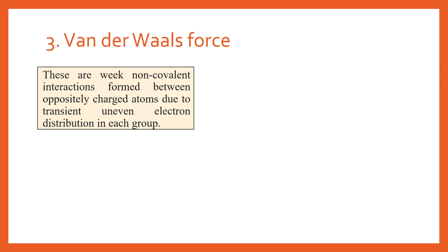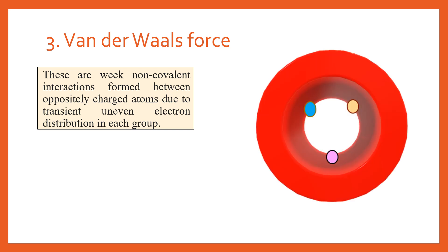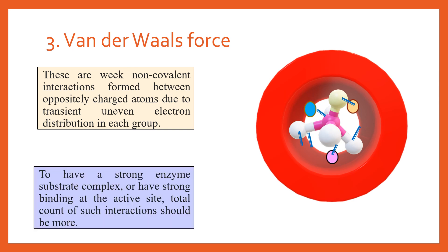The third type of interaction is van der Waal interaction or van der Waal forces. These are very weak, non-covalent interactions formed between two oppositely charged atoms due to a transient, uneven electron distribution in the groups. The enzyme has an active site with three different amino acids, and the substrate binds to it through van der Waal forces. For a stable enzyme-substrate complex to form, strong bonding is required, which results only when the total count of such van der Waal interactions is greater.